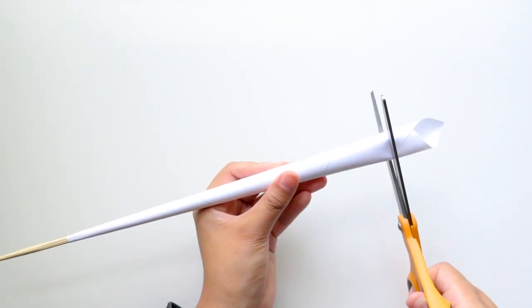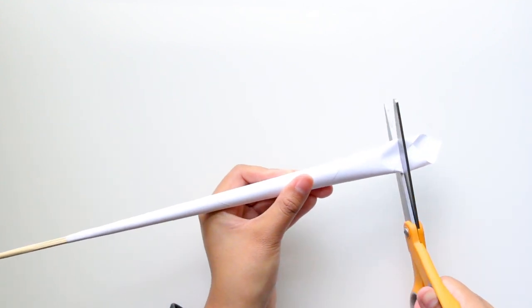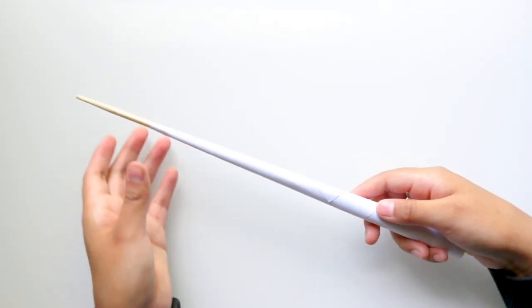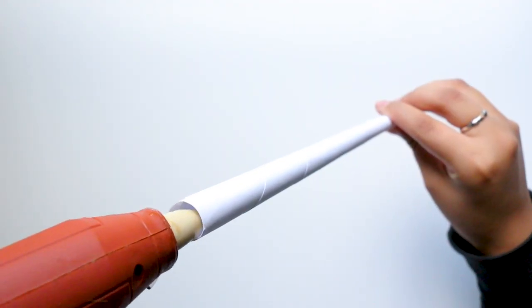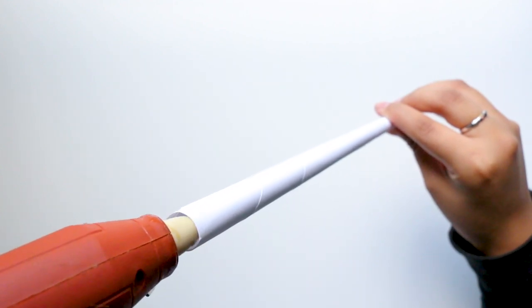Decide the length of your wand, then cut off the excess. As you can see, I made this wand longer. Next, hold it by the chopstick end and fill the cone with hot glue.